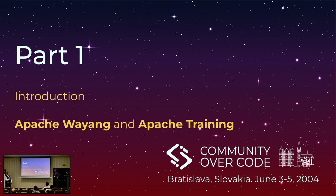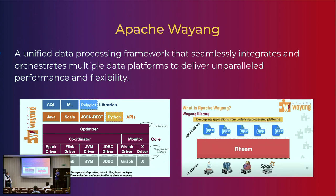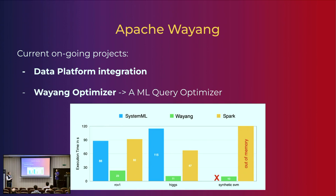Introduction to Wayang by Klausia. Apache Wayang is a unified data processing framework that integrates resources seamlessly and orchestrates multiple data platforms. The idea of Wayang is to create an abstraction layer between other tools like Spark, Flink, JDBC, Kafka, and so on, to create better integration between data sources. One of the two ongoing projects in Wayang is about data platform integration and the Wayang optimizer.